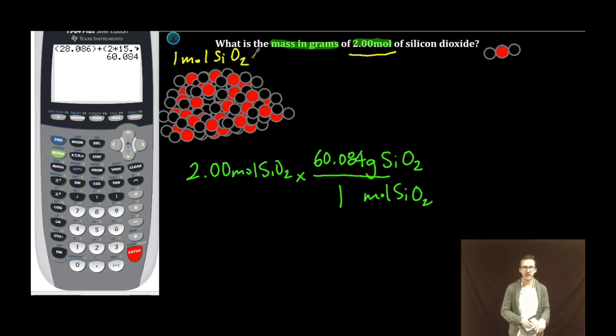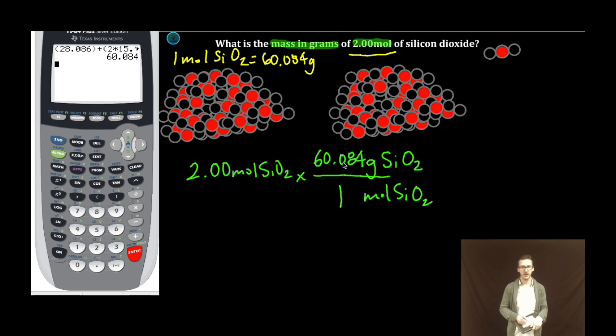So, this pile of SiO2 is equal to 60.084 grams. Basically, we want to know what happens if I have two moles. Each mole, roughly 60 grams.